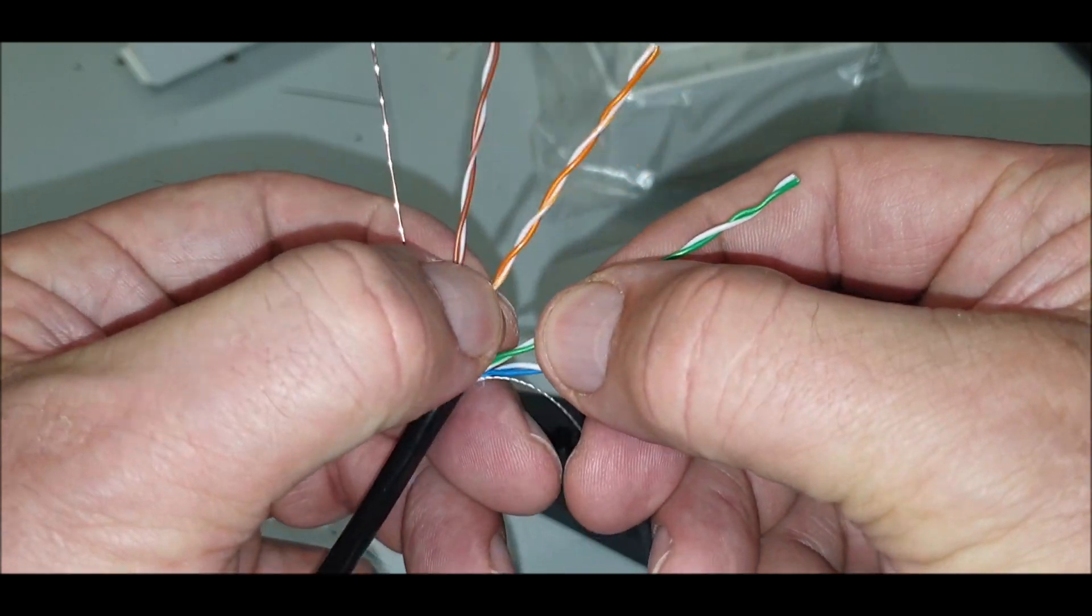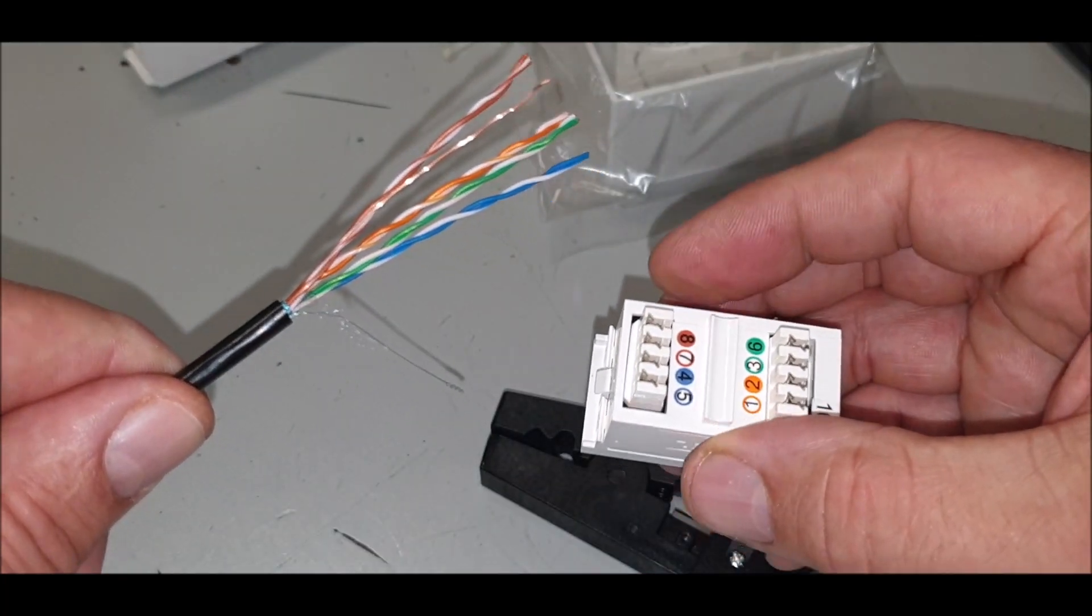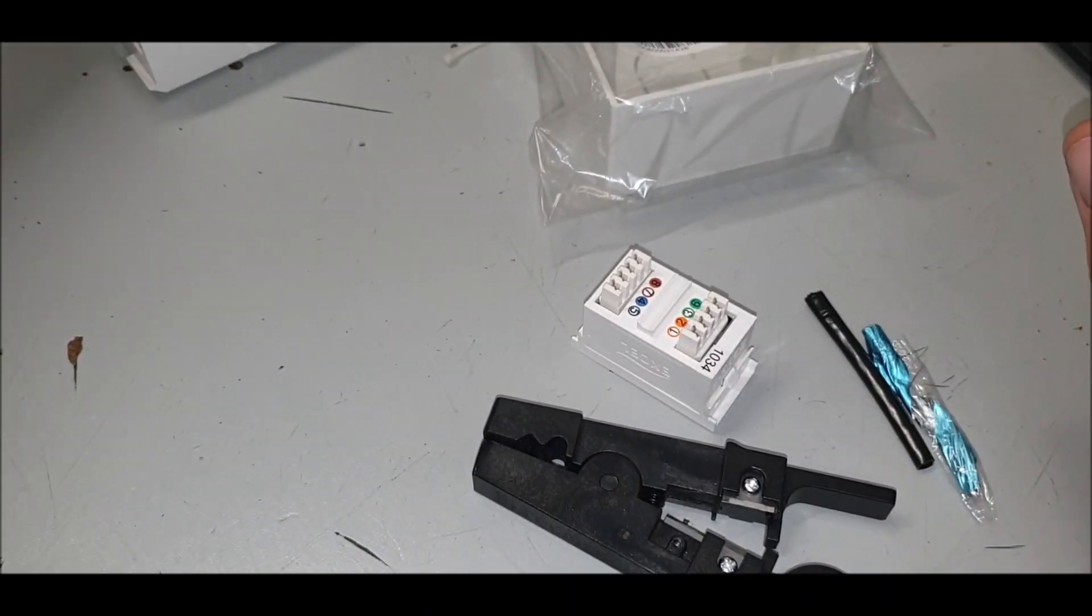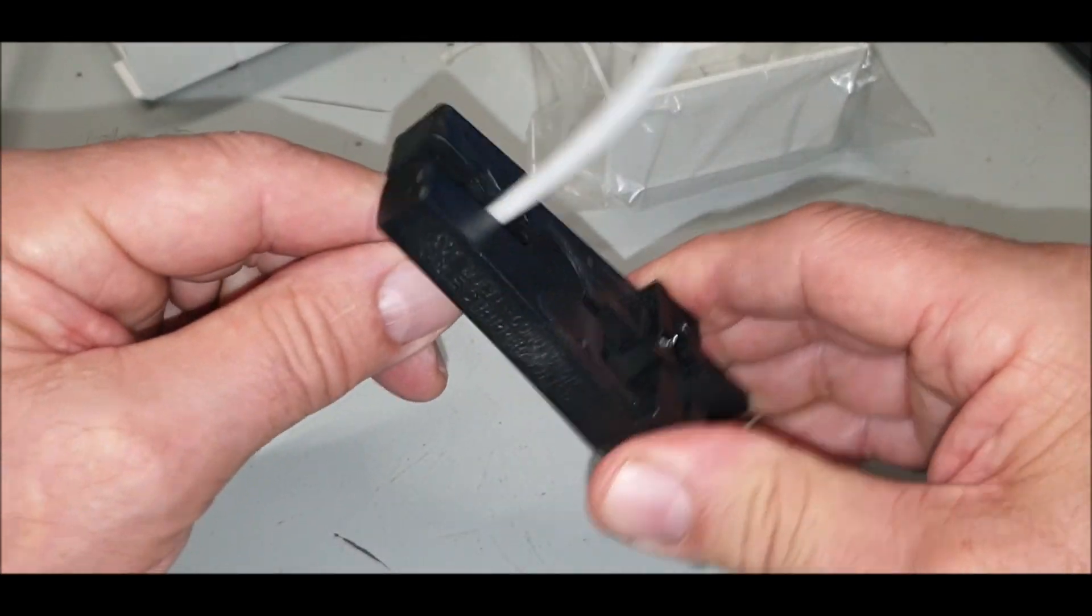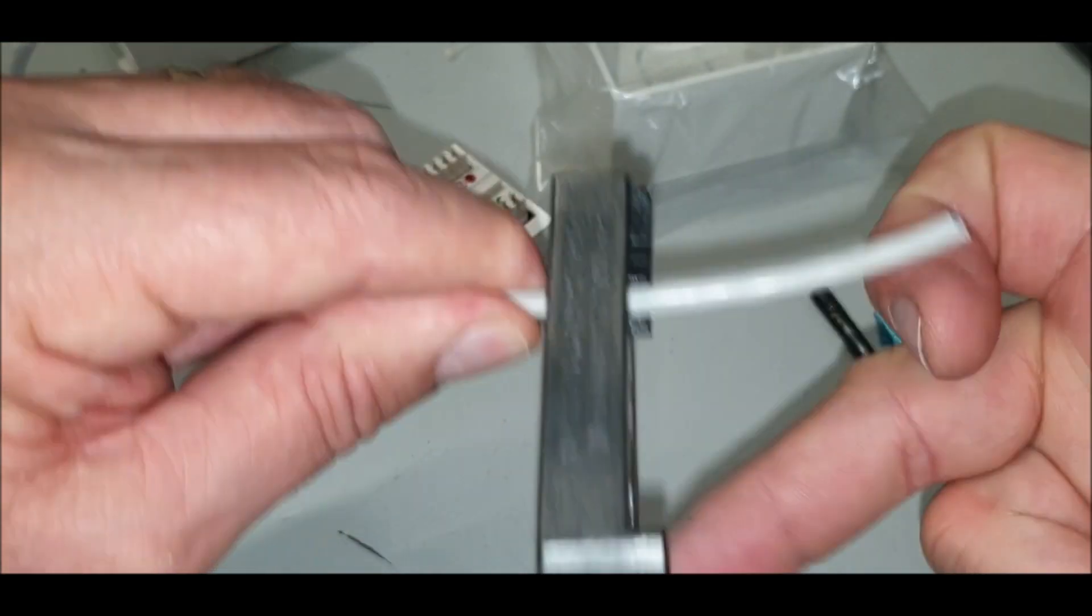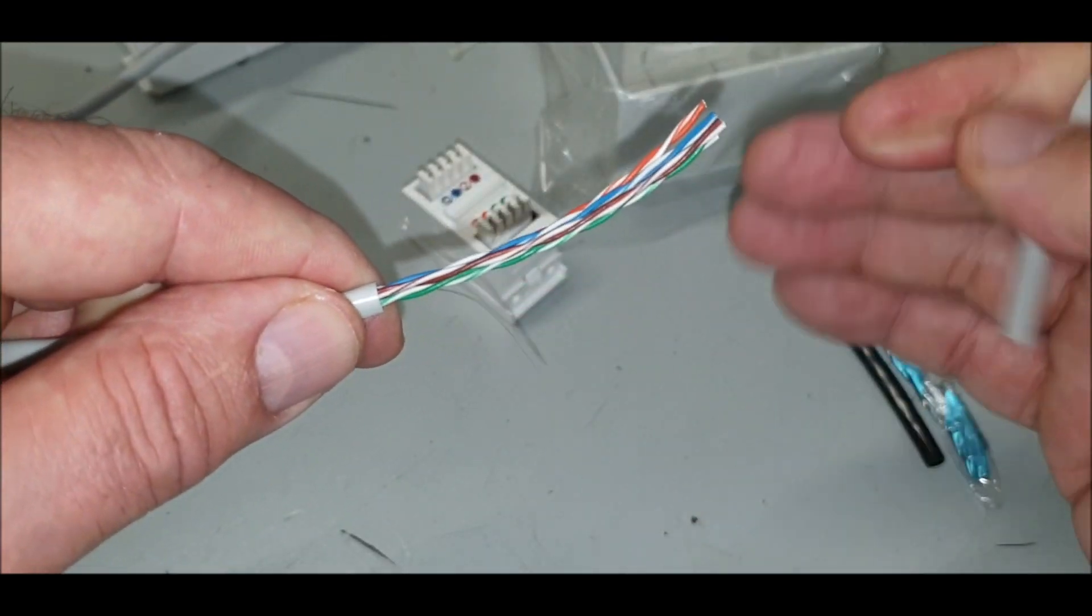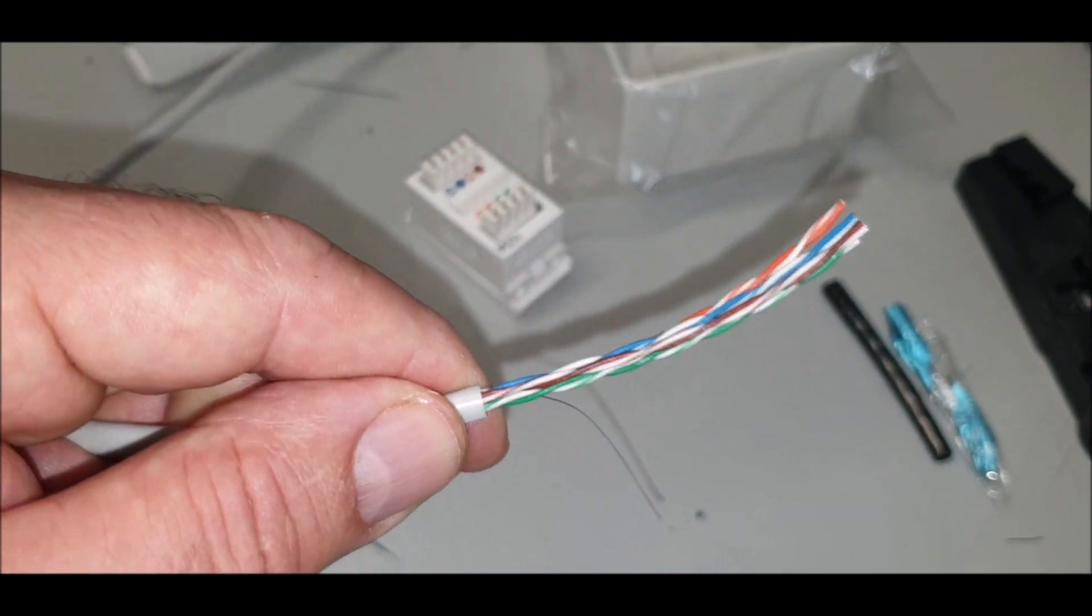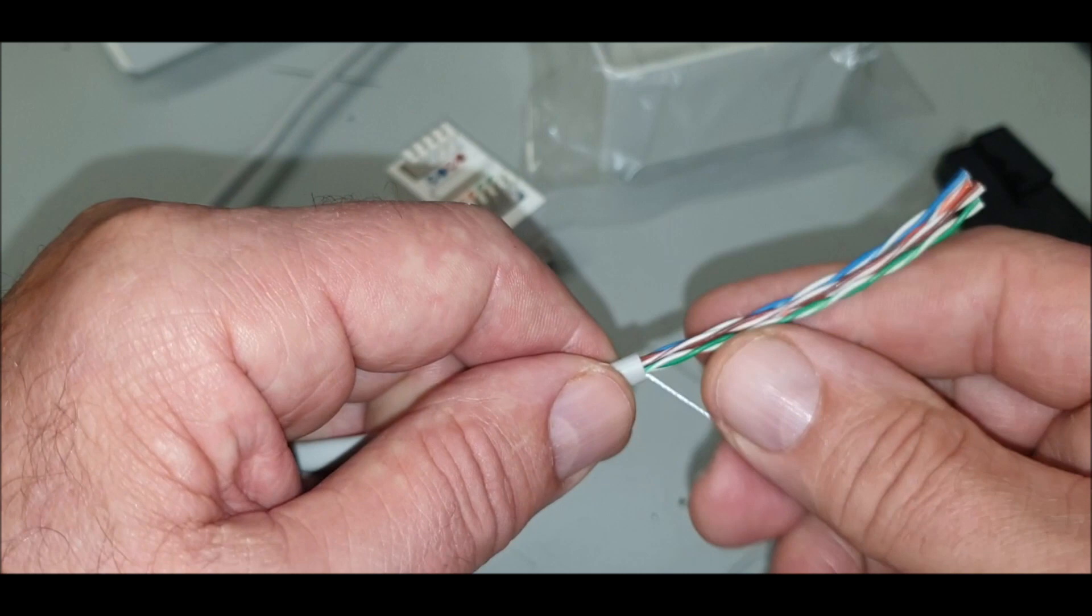This is your non-shielded which you've seen before. I'll put a link to the previous video. It's got the same little piece of string you can use to pull the sheath.